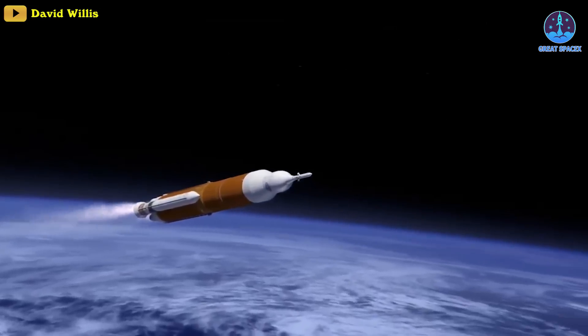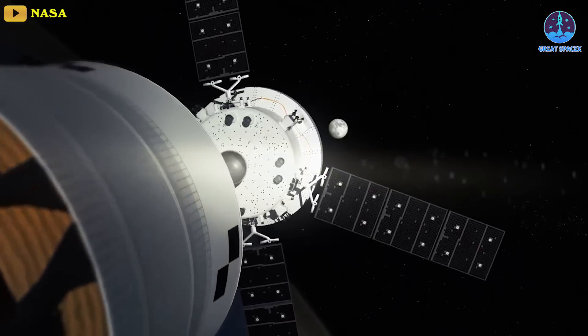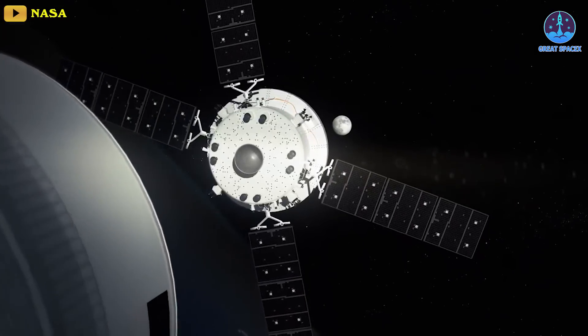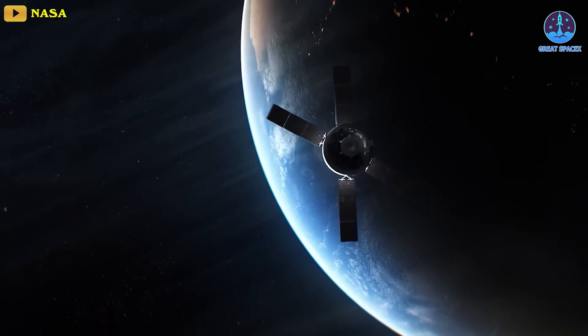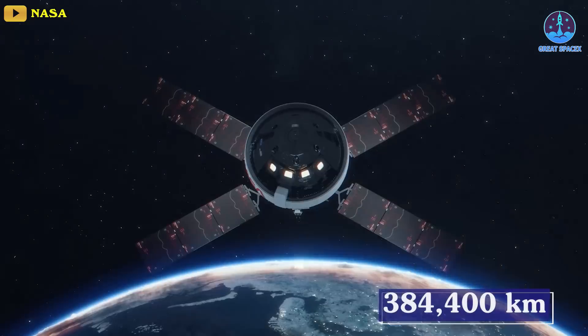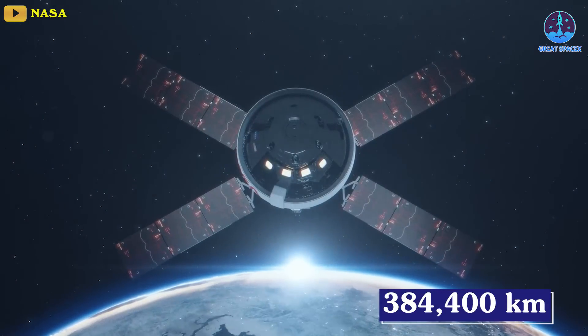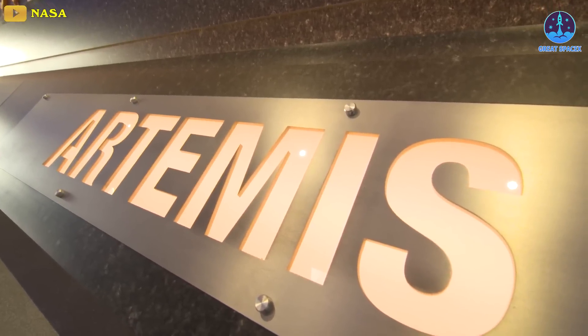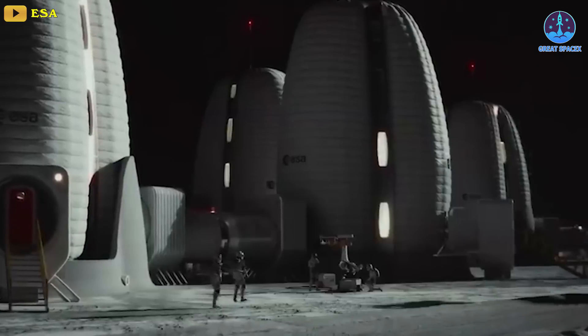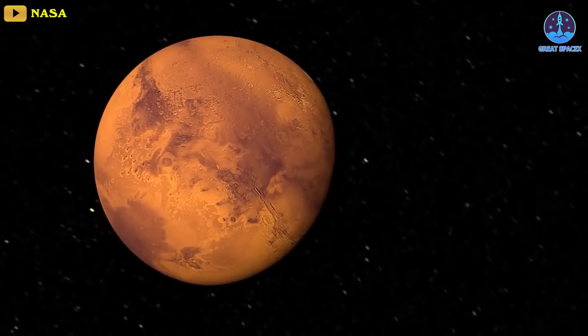The ultimate goal of this project is to get the SLS rocket to orbit and deploy the Orion capsule, which is built for astronauts but will fly empty for this test mission. The capsule will go on to orbit the Moon before making the 384,400 km trek back home. The Artemis 1 mission is just the beginning of a program that will aim to return humans to the Moon and eventually land crewed missions on Mars.